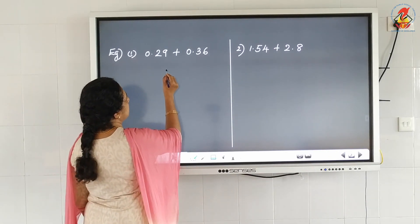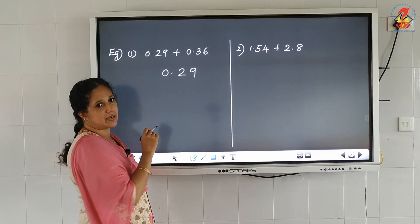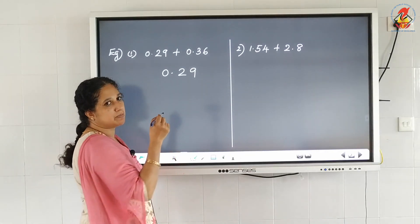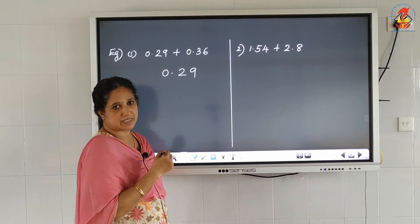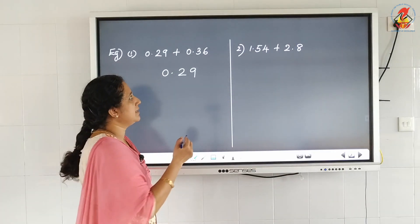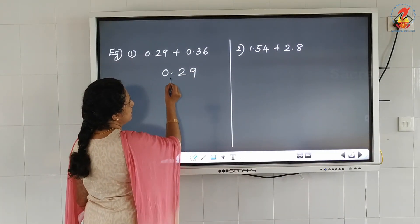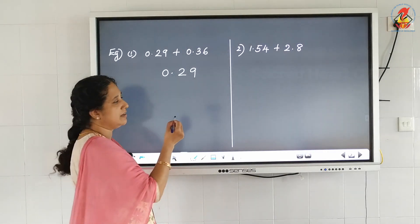We can start adding. Write 0.29 first, then write the next number under the first number, so that the decimal point should be directly below the decimal point of the first number — one below the other.